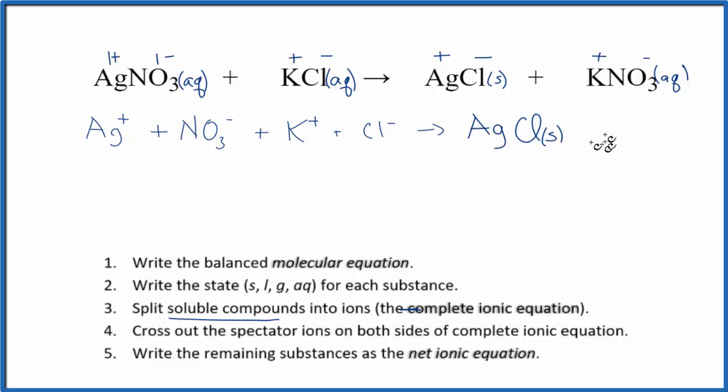And then we do have our soluble K plus, plus the nitrate NO3 minus. Shrink that down a little bit too. So now we have our complete ionic equation. All the soluble compounds, they're split up into their ions. And then the insoluble, we left as they were.